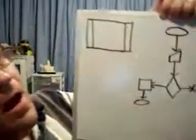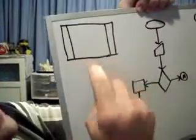I'm going to continue my flow charting discussion with the next symbol, and it's called a predefined process.